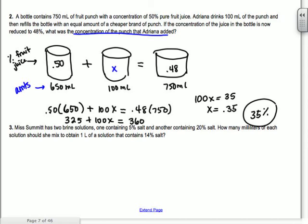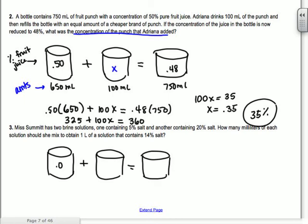So Ms. Summit, I should change that to Mrs. Mann now, shouldn't I? Has two brine solutions, one containing 5% salt and the other containing 20% salt. Okay. So the percent that we're talking about is salt. So that's going to go on the inside. So 5%, so 0.05, not 0.5, right? 0.5 is 50%. And 20%, 0.20. How many milliliters of each should she mix to obtain one liter of 14%?